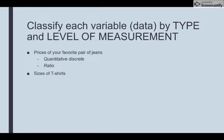Sizes of t-shirts – typically sizes are going to be things like small, medium, large, extra-large, and so forth – doesn't really involve numbers, those are words, so I would say it is qualitative, which means it's neither discrete nor continuous.